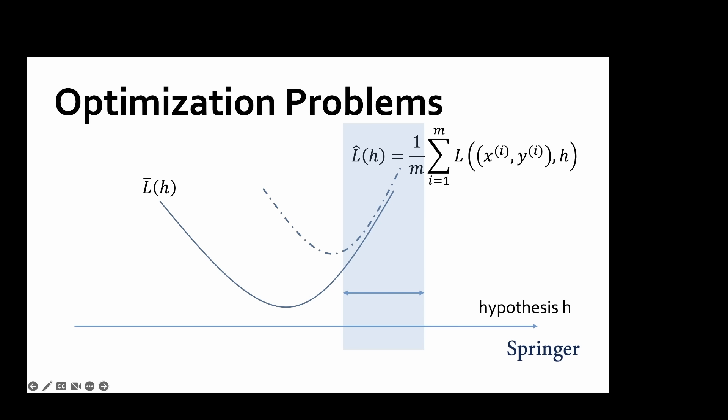For example, using a linear model and the squared error loss results in the empirical risk being a smooth and convex function. We can use simple gradient descent methods to minimize such a function.